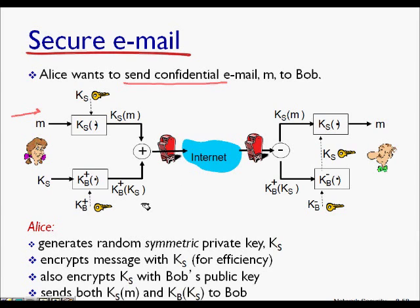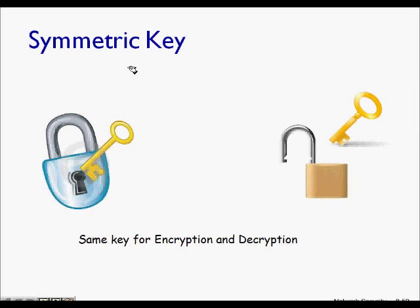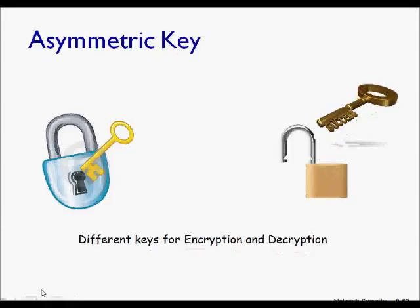To understand how to send a confidential email, you need to know about symmetric key encryption and public key encryption. In symmetric key encryption, the same key is used for both encryption and decryption, so Alice and Bob share a secret key. In public key (asymmetric) encryption, a different key is used for encryption than for decryption.